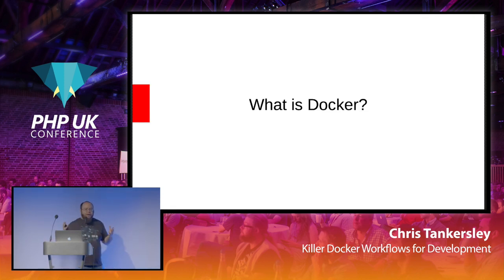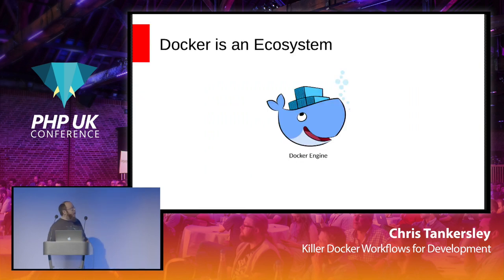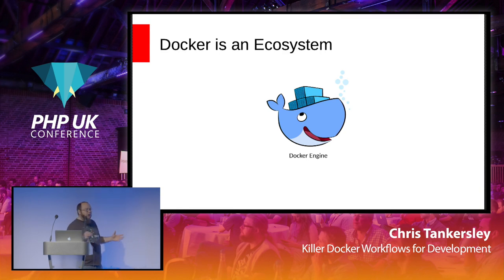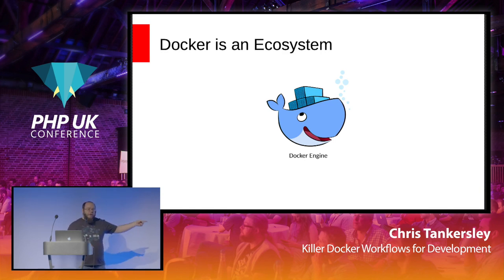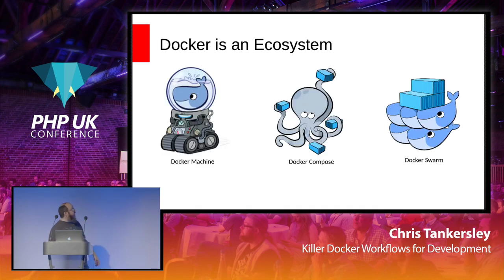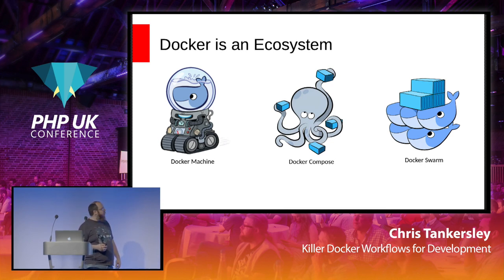Docker itself, when you get right down to it, is just Vagrant for containers. Docker doesn't actually do anything magical — it's using existing technologies. Docker nowadays is an entire ecosystem, so we get this muddled terminology. When we say Docker, nine times out of ten you're probably talking about Docker Engine, which is the actual command line and the API it's talking to. You have a couple of other things on top of that, like Machine, Compose, and Swarm — though Swarm failed in the market. You've got Docker Compose for orchestration and Docker Machine for building machines that run Docker.